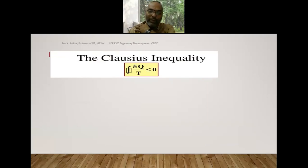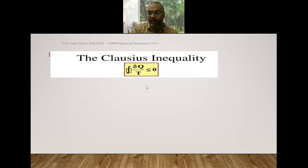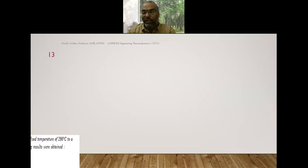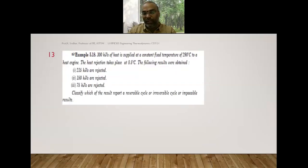Now coming to the Clausius inequality. If you want to find out whether a particular process is feasible or not, that is determined by the Clausius inequality. The Clausius inequality states that the cyclic integral of δQ/T is always less than or equal to zero — equal to zero for a reversible process, less than zero for an irreversible process, and if it is greater than zero it is impossible and violates the second law of thermodynamics.